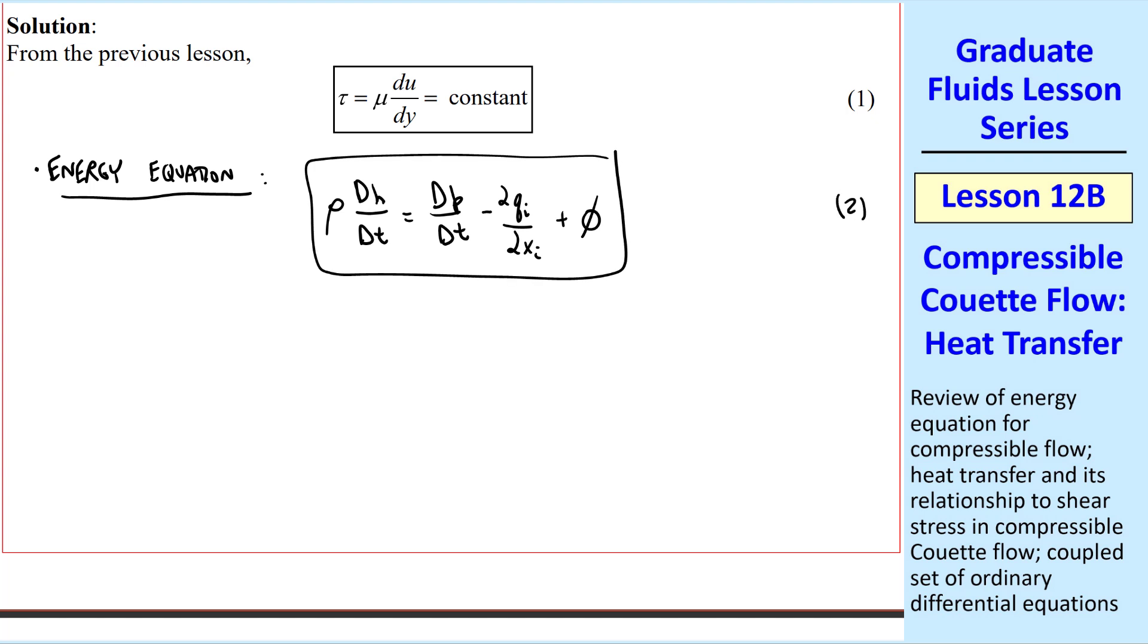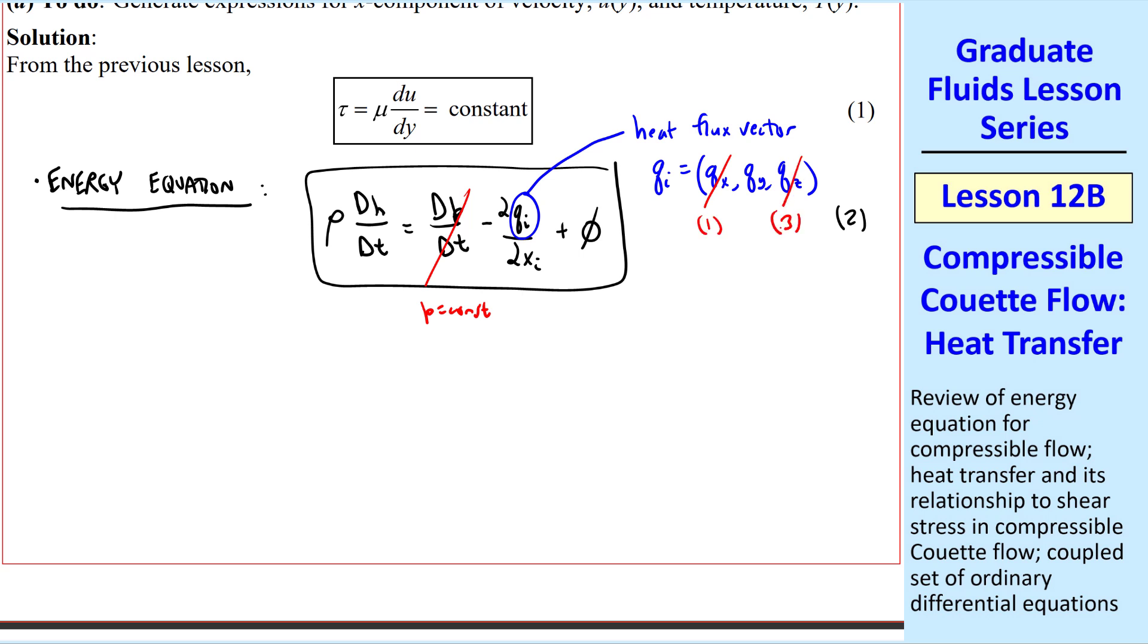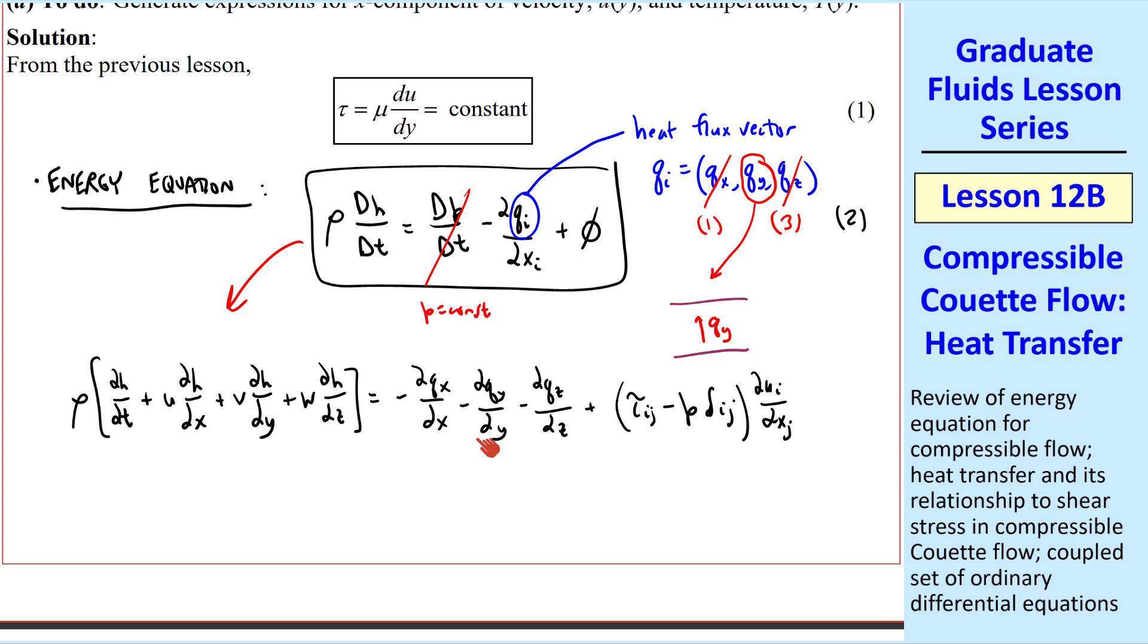Now let's simplify this in the normal way. As I just mentioned, p is constant, so that term goes away. And qi is the heat flux vector with components qx, qy, and qz. But the flow is fully developed and two-dimensional. So the only component of vector q is qy, which is heat transfer in the y direction. Let's expand this equation, where this intermediate equation is a mixture of Cartesian coordinates and tensor notation. But you can do some algebra on this, which I will not include here, to show that this term reduces to mu du dy squared. Or since tau is mu du dy, this becomes tau du dy.